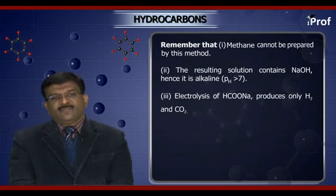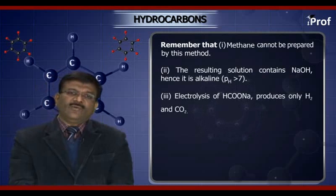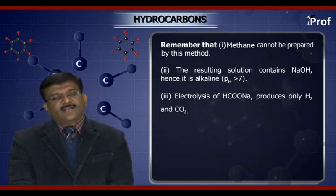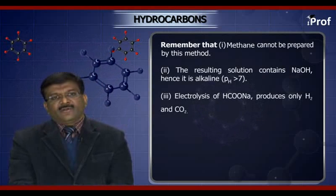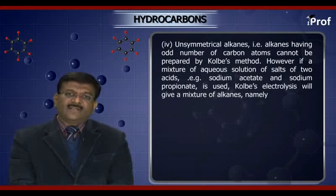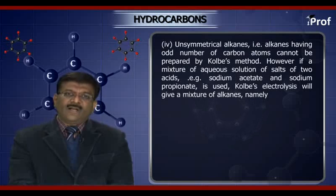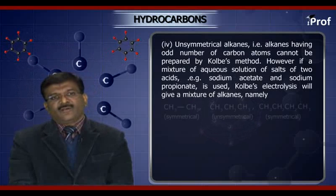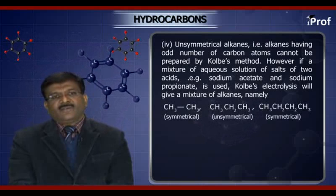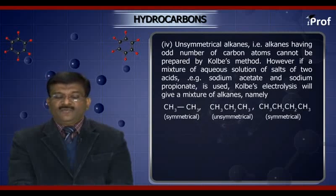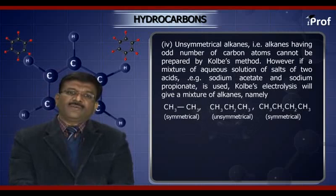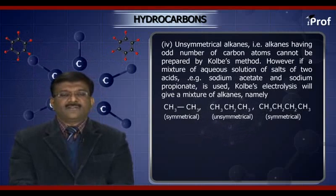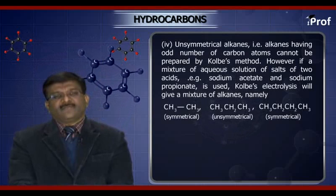Electrolysis of sodium formate (HCOONa) gives only hydrogen and carbon dioxide. The unsymmetrical alkanes — that is, alkanes having an odd number of carbon atoms — cannot be prepared by the Kolbe electrolytic method. However, if a mixture of aqueous solution of salts of two acids, for example sodium acetate and sodium propionate, is used, Kolbe electrolysis will give a mixture of alkanes.